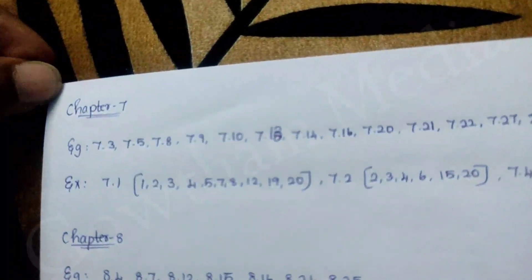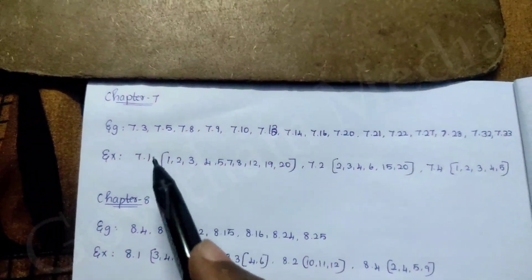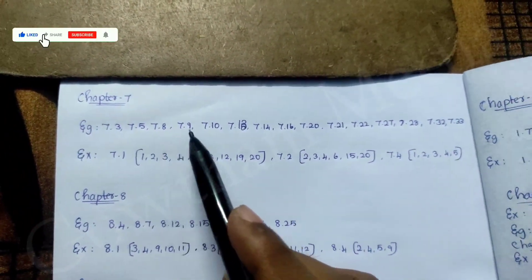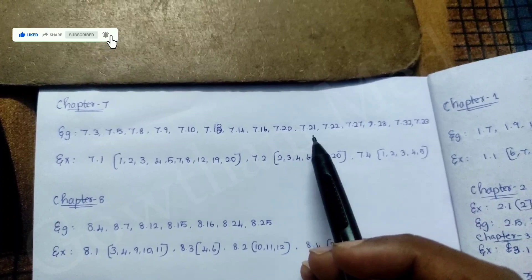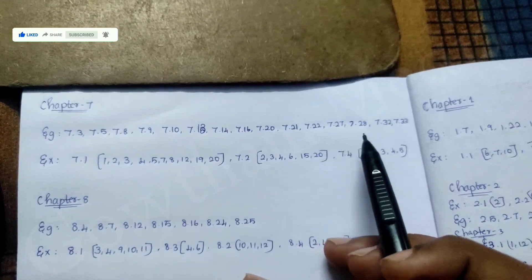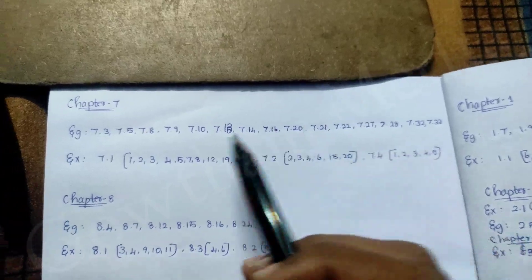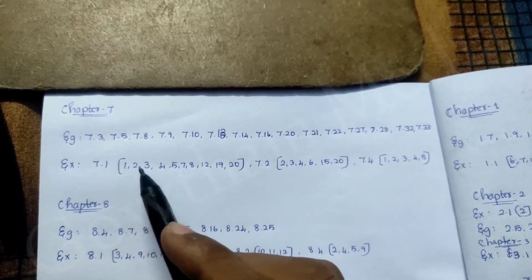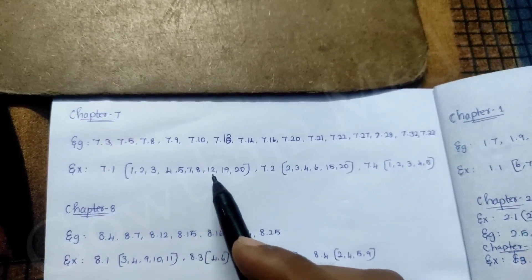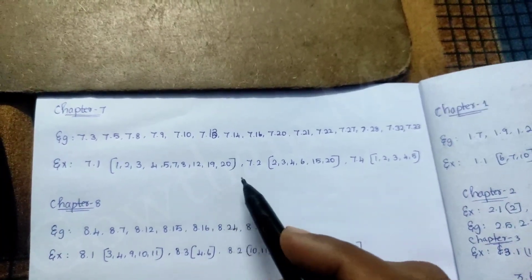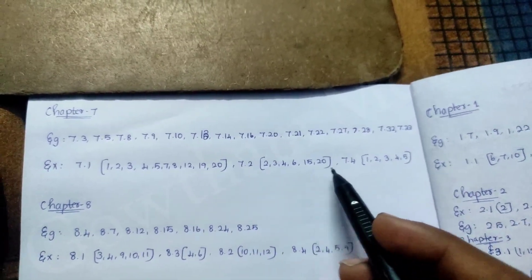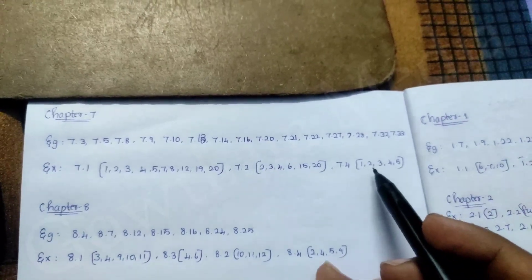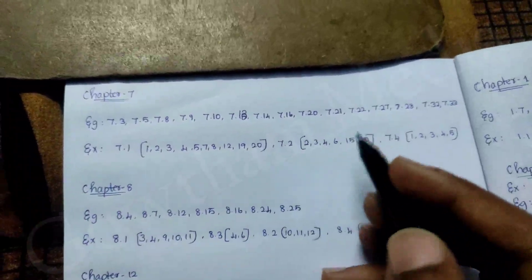Chapter 7. Examples: 7.22, 7.27, 7.28, 7.32, 7.33. Exercise 7.1 — 1st, 2nd, 3rd, 4th, 5th, 7th, 8th, 12th, 19th, 20th. 7.2 — 2nd, 3rd, 4th, 6th, 15th, 20th. 7.4 — 1st, 2nd, 3rd, 4th, 5th.